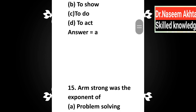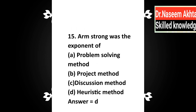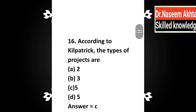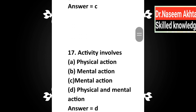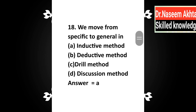Question 15: Armstrong was the exponent of — a) problem solving method, b) project method, c) discussion method, d) heuristic method. Correct answer is D: heuristic method. Question 16: According to Kilpatrick, the types of object projects are — a) 2, b) 3, c) 5, d) 5. Correct answer is C: 5. Question 17: Activity involves — a) physical action, b) mental action, c) mental action, d) physical and mental action. Activity actually involves both physical and mental action. Question 18: We move from specific to general — that is the inductive method.